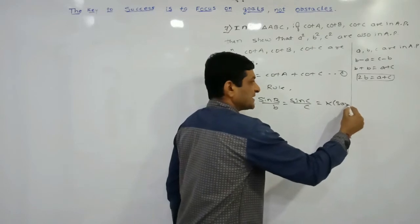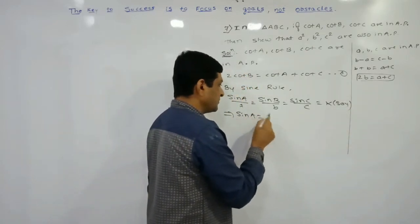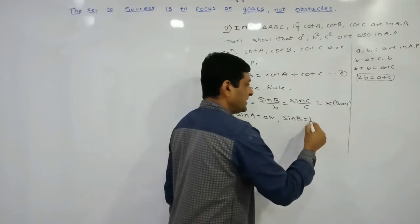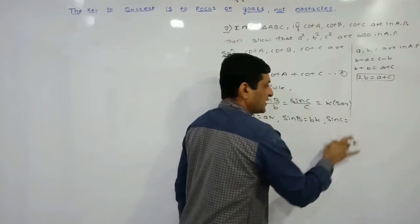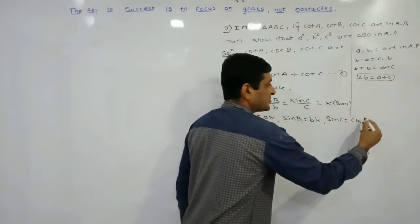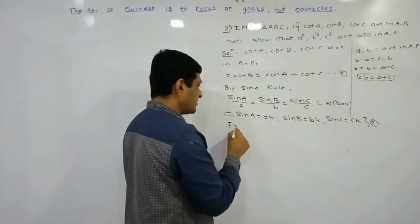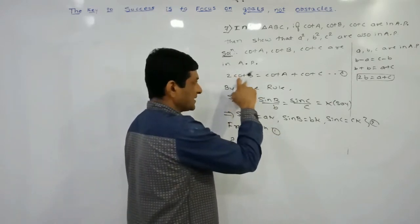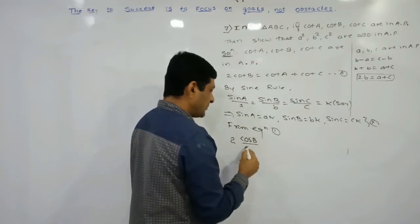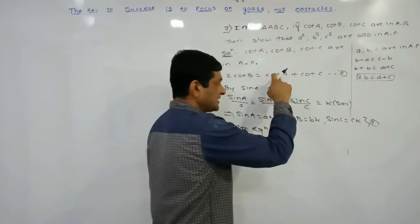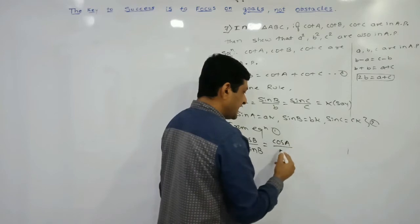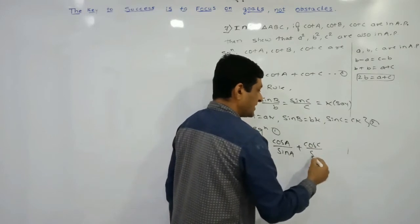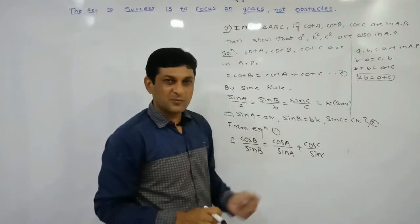Denoting the common ratio as k, from the sine rule: sin A = ak, sin B = bk, sin C = ck — let us call this equation number two. Now from equation one, we convert cot B as cos B / sin B, and similarly cot A = cos A / sin A and cot C = cos C / sin C, so that we can apply sine rule and cosine rule.